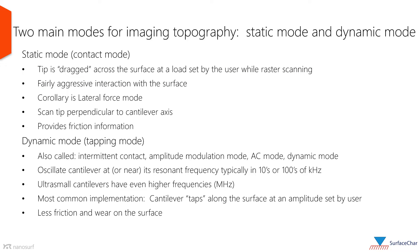Generally speaking, there are two main modes for imaging topography: static mode and dynamic mode. In static mode, the tip is dragged across the surface, applying a certain force set by the user. It is a fairly aggressive interaction with the surface. If the scan is done perpendicular to the cantilever axis, lateral force can be probed, which provides friction information.